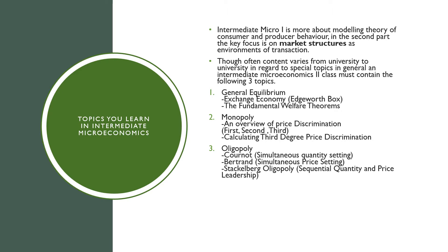In the second part, the key focus is on market structures as an environment of transaction. Though often content from university to university differs with regards to special topics, in general, an Intermediate Microeconomics 2 class must contain the following three topics: General Equilibrium Theory, where we go through the Edgeworth Box in the context of an exchange economy and the Fundamental Welfare Theorems. The second point is on Monopoly, where we give an overview of price discrimination — first, second, and third — though we only really calculate the third.